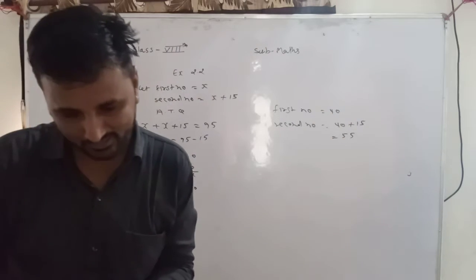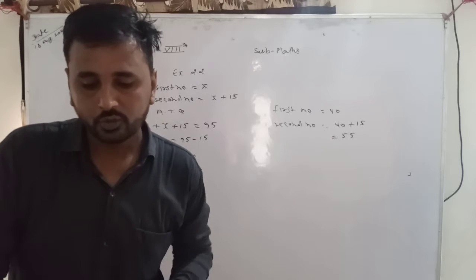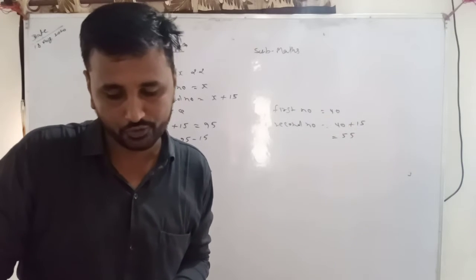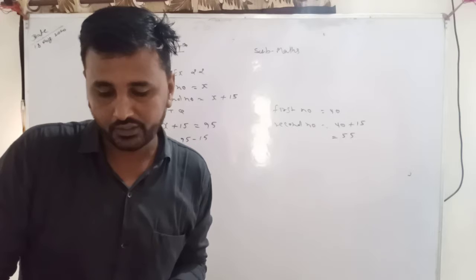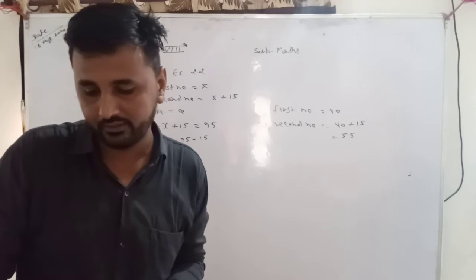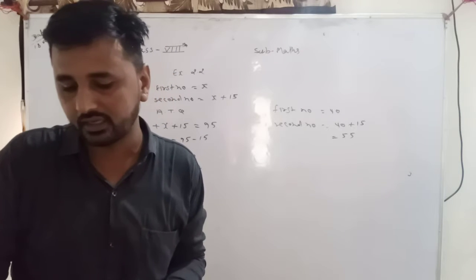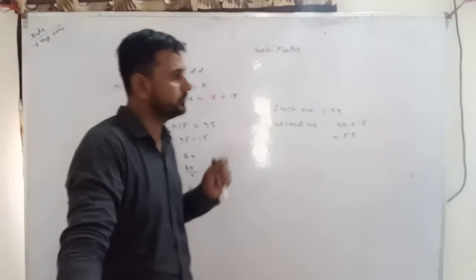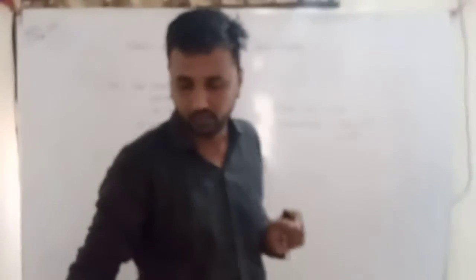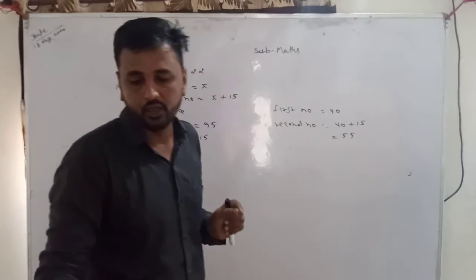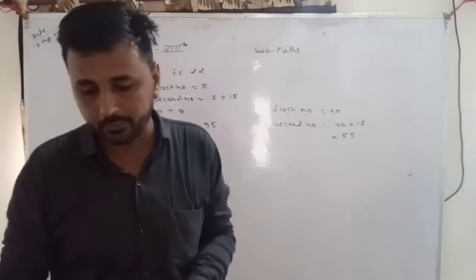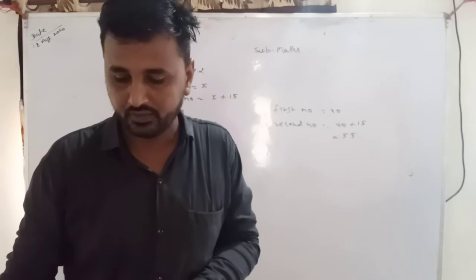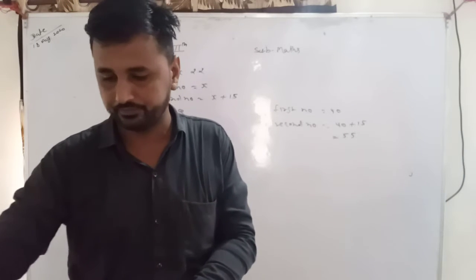Then next question: Two numbers are in the ratio 5:3. If they differ by 18, what are the numbers? अपने पास दो number है, वो ratio में है — 5 ratio 3 है — और उन दोनों number का जब difference है वो 18 है। अपने को दोनों number find करने है।